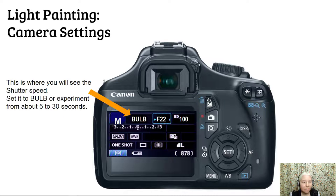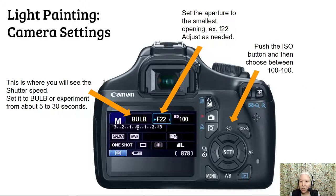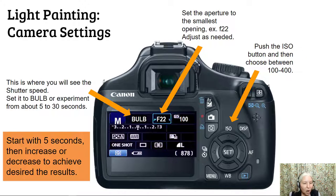More camera settings: this is where you'll see the shutter speed. Set it to bulb, or the other option is to set it for seconds — you can start anywhere between around 5 to 30 seconds. Set the aperture to the smallest opening, for example F22, and adjust as needed. Push the ISO button and choose between 100 and 400, and again you'll have to experiment with what works best. As a reminder, start with five seconds, then increase or decrease to achieve the desired results. Depending on the lighting of where you're at and the light source, or if you change your settings, you may have to change your time and your aperture.